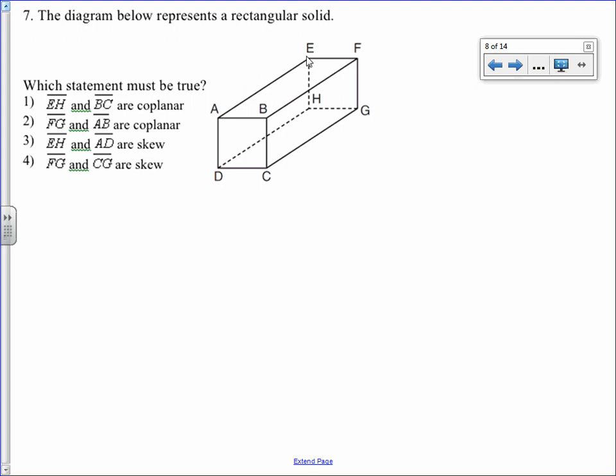FG and AB are not coplanar. There's no way they can be on the same plane. Choice three, EH and AD are skew. That means they'll never touch, they'll never intersect, they're not parallel. EH and AD are parallel to each other, therefore they're not skew. FG and CG are obviously not skew because they intersect. Again, the answer is choice 1.